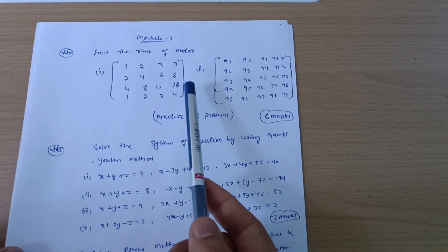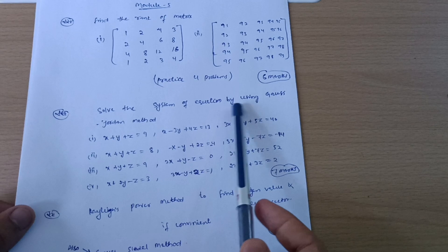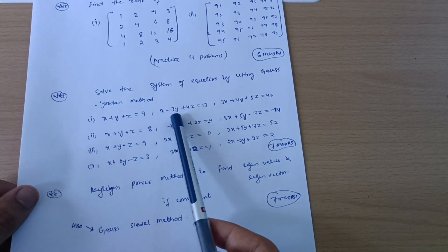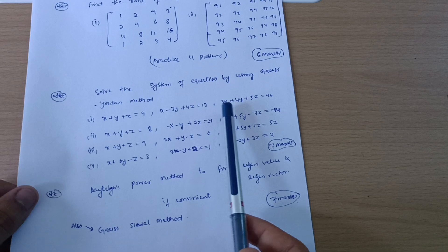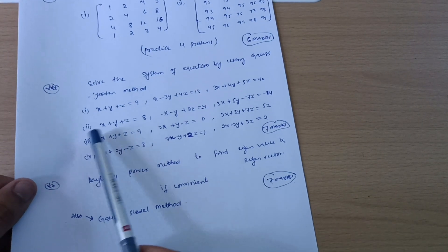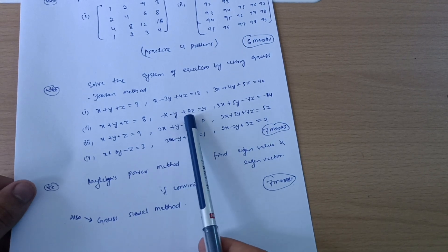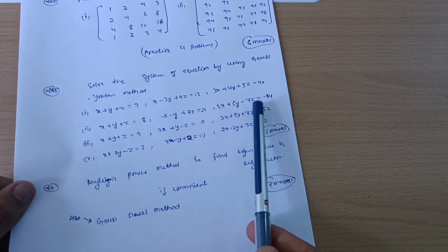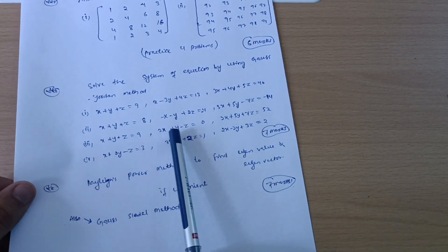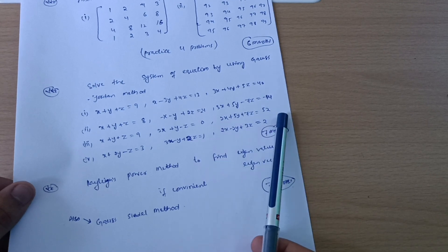Solve the system of equation by using Gauss-Jordan method. x plus y plus z is equal to 9, x minus 3y plus 4z is equal to 13, 3x plus 4y plus 5z is equal to 40. Next question is x plus y plus z is equal to 8, minus x minus y plus 2z is equal to minus 4, 3x plus 5y minus 7z is equal to minus 14. x plus y plus z is equal to 9, 2x plus y minus z is equal to 0, 2x plus 5y plus 7z is equal to 52.